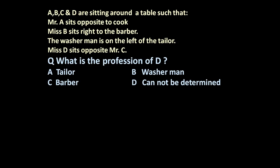Here the given problem is A, B, C and D are sitting around a table such that Mr. A sits opposite to cook, Miss B sits right to the barber, the washerman is on the left of the tailor, Miss D sits opposite to Mr. C. Based on this information we have to answer a question: what is the profession of D? Tailor, washerman, barber or cannot be determined.